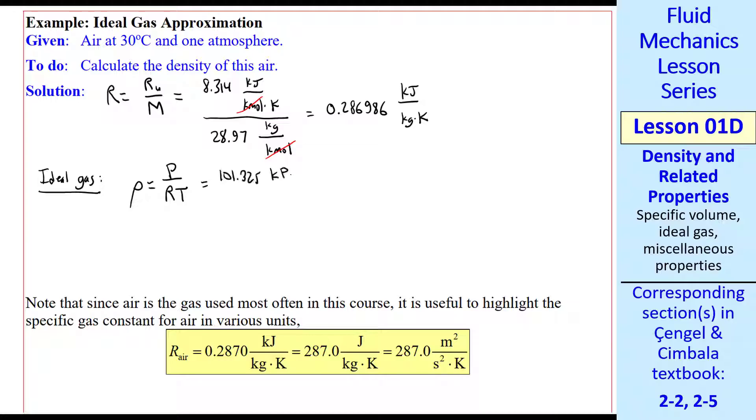We plug in our numbers, with units of course. Atmospheric pressure is 101.325 kPa. Plug in the value for R from above. I'm keeping more digits than necessary to avoid roundoff error as we've discussed previously. We always have to convert temperature to Kelvin. And notice that the K's cancel out.